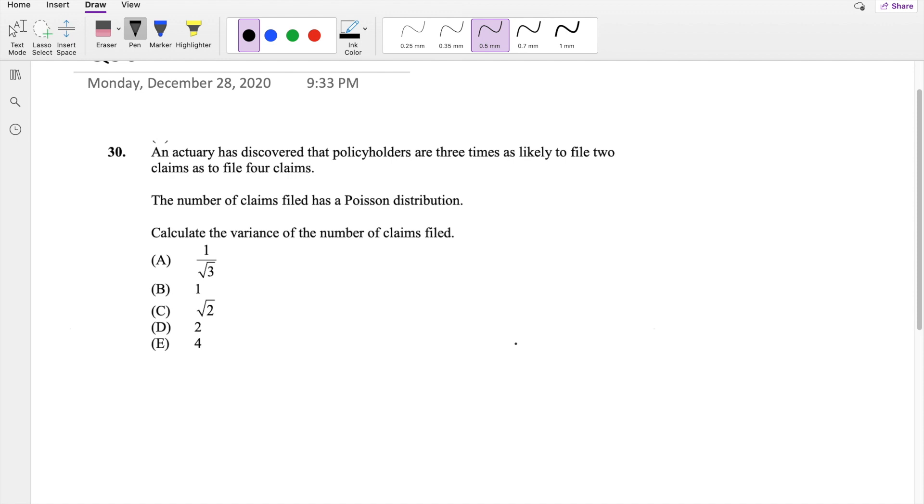Okay, assuming you've attempted it, let's just dive right in. An actuary has discovered that policyholders are three times more likely to file two as to file four claims. So which one are you more likely to file? You're more likely to file two claims, right? So the probability of two claims is equal to three times the probability of four claims.